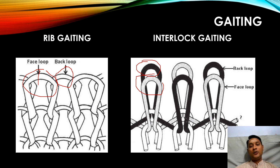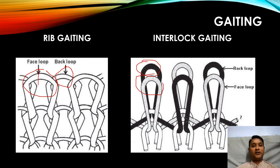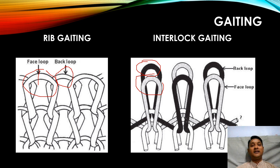These two terminologies are very important to understand whether a particular fabric quality is knitted using a rib machine or an interlock machine. If the face and back loops are not facing each other, it means the fabric is knitted using a rib machine. If the face and back loops are facing each other, then the fabric is manufactured using an interlock machine.